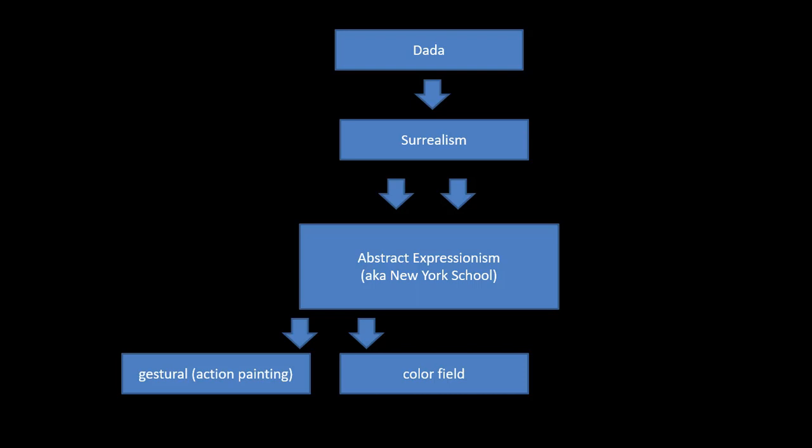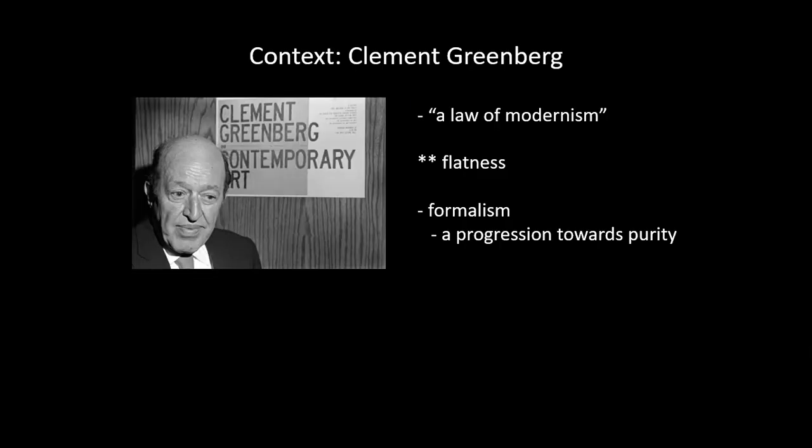There are two different types of abstract expressionism that you'll want to know for your final exam: gestural or action painting abstract expressionism, and color fields. We'll look at these more specifically when we look at the imagery. But first, one more point of context — Clement Greenberg.